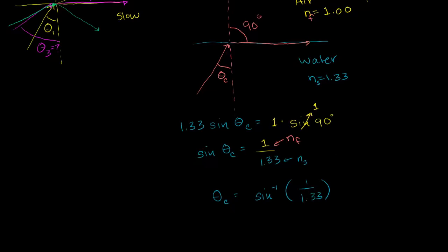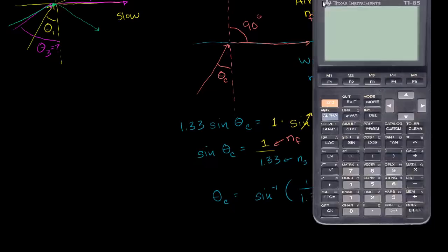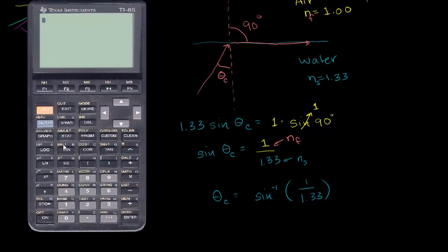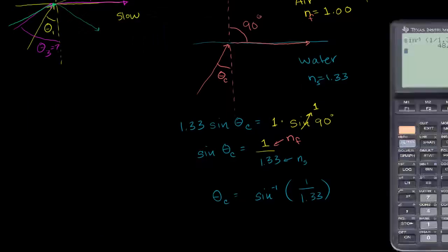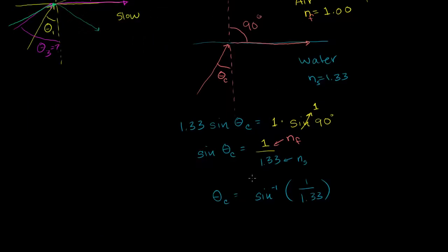Let's get our TI-85 out and find the inverse sine of 1 divided by 1.33. We get 48.8 degrees. So our critical angle is 48.8 degrees.